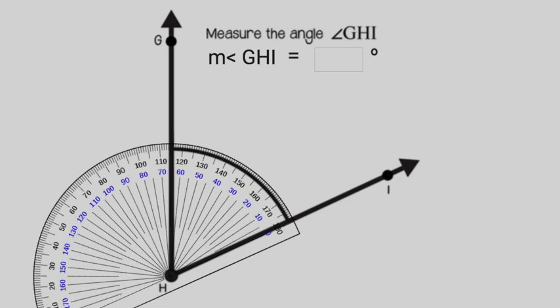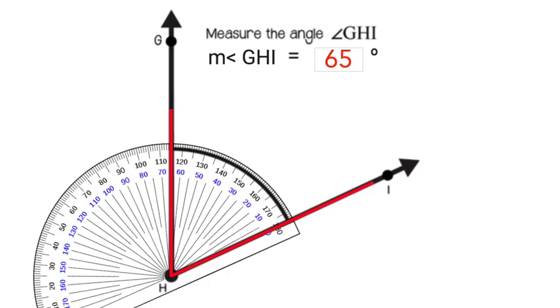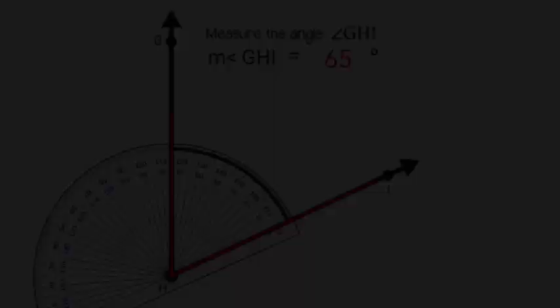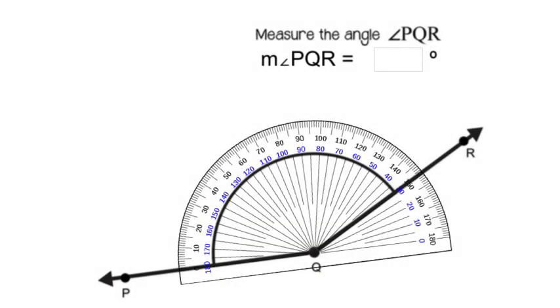Now we have an acute angle, GHI, where the bottom ray there is at zero degrees, ray HI, and then ray HG passes through a mark on the protractor that's between 60 and 70 degrees. Right in the middle would be 65 degrees. So we're just reviewing how we measure angles.